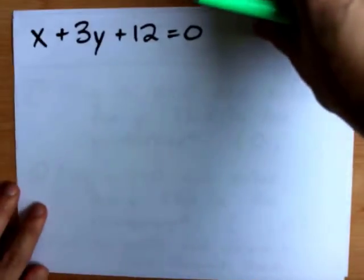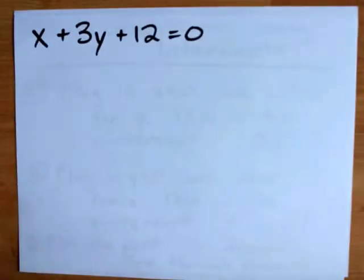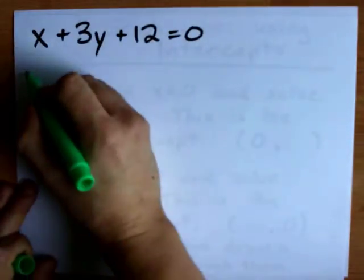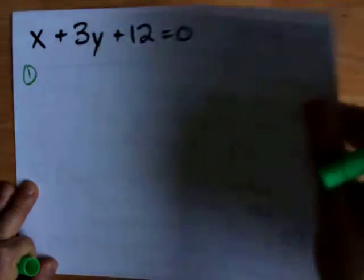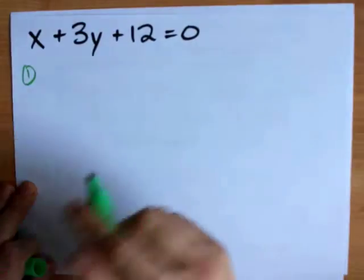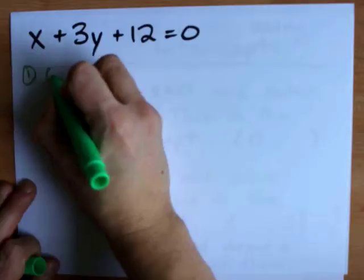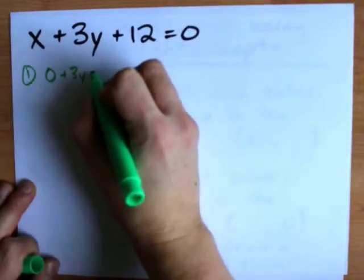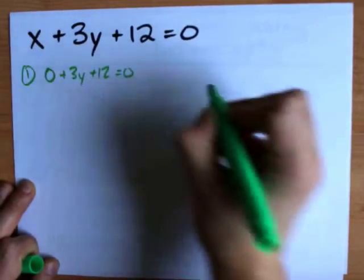Let's do it for this line, which is in standard form. Now, step one is to plug in... wait, what do I say? Step one is plugging in x equals zero. So what I have is 0 plus 3y plus 12 equals 0.